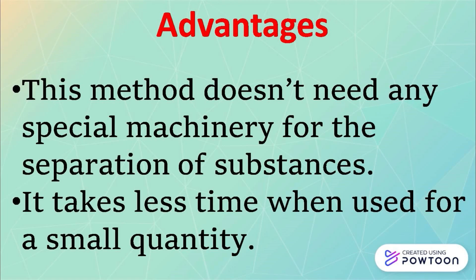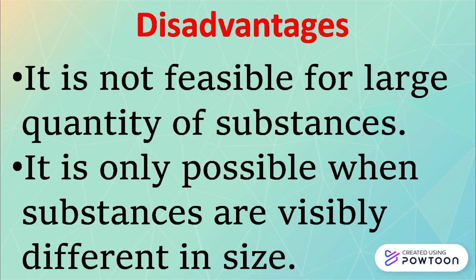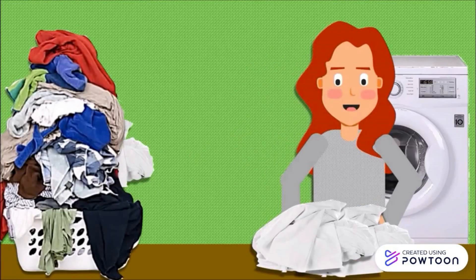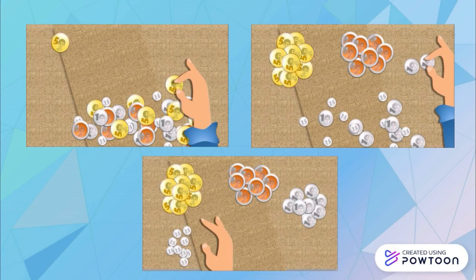Here are the advantages of hand-picking. This method doesn't need any special machinery for the separation of substances. It takes less time when used for a small quantity. But it also has disadvantages. It is not feasible for large quantities of substances. It is only possible when substances are visibly different in size. The components must be visible and big enough to be seen and picked up by hand.